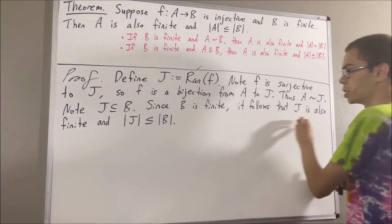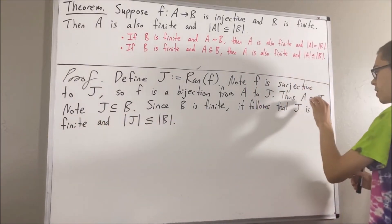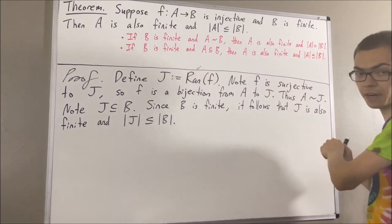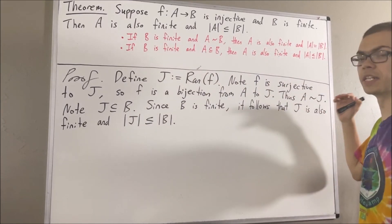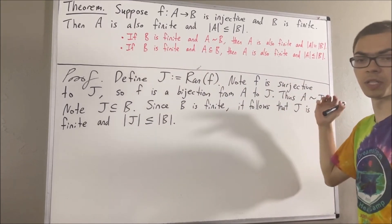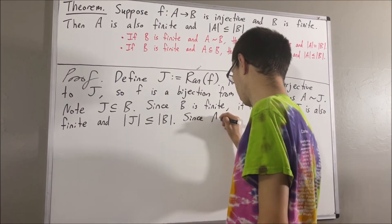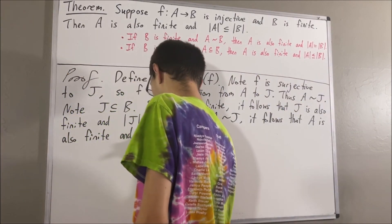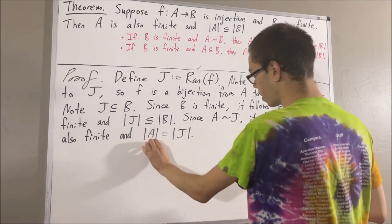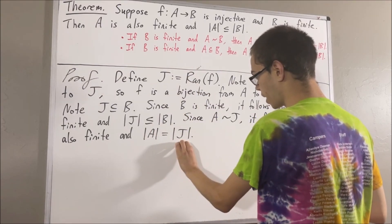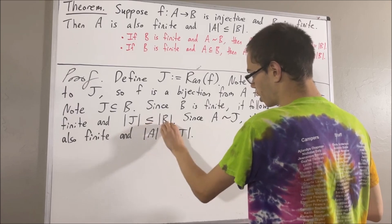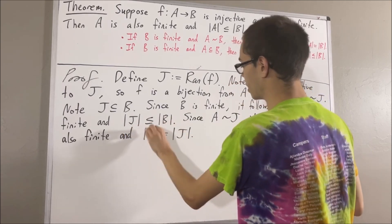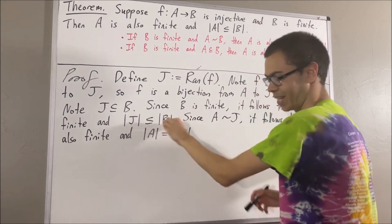But then, since J is finite and there's a bijection from A to J, the first fact tells us that A is finite, and the number of elements in A is equal to the number of elements in J. Since the number of elements in A equals the number of elements in J, which is less than or equal to the number of elements in B, these two facts tell us that the number of elements in A is less than or equal to the number of elements in B.